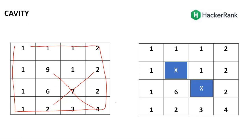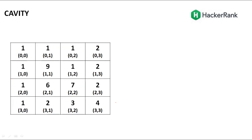Since it is a matrix, you have row index and column index. To understand better, write down the matrix indexes. For the top cell (up), the row index decreases by one and the column index stays the same. For down, the row index increments by one and the column index remains the same. For left and right, the row remains the same while the column index decrements or increments respectively.